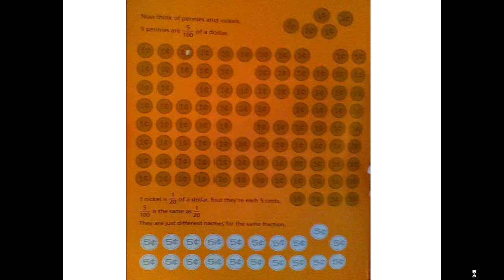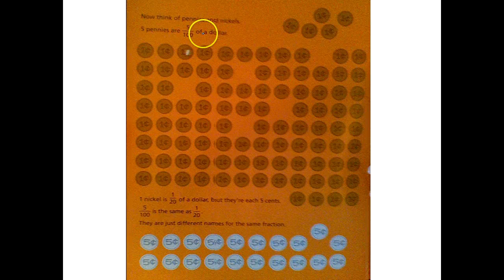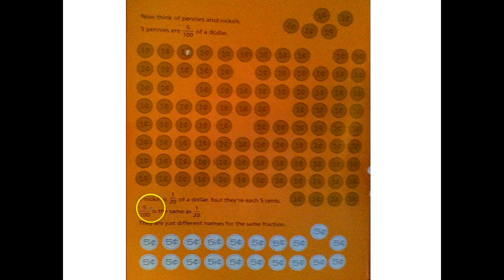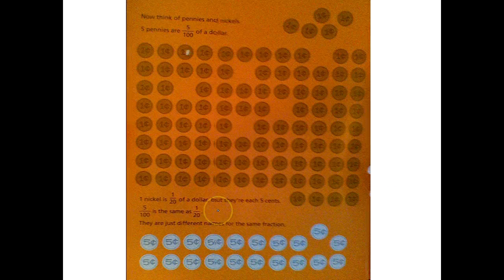Now let's think about pennies and nickels. Five pennies are five one-hundredths of a dollar. If one nickel is one-twentieth of a dollar, they're both worth five cents. So five-hundredths is the same as one-twentieth. They are equivalent or equal.